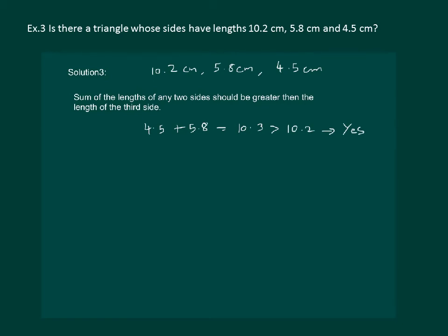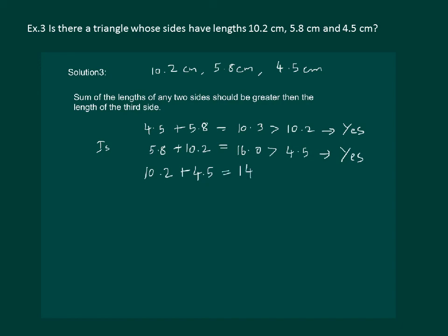Let us also check: is 5.8 plus 10.2 greater than the third side of 4.5 cm? Yes, it is greater. The last combination is 10.2 cm plus 4.5 cm, which comes out to 14.7 cm, which is greater than the third side of 5.8 cm. Hence, we can say that a triangle with the given measures is possible.